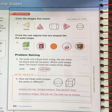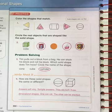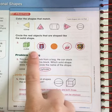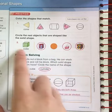Circle the real objects that are shaped like the solid shape. Here's a cube. The present is shaped like a cube, and the Rubik's Cube is shaped like a cube.